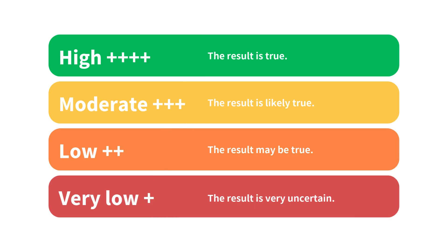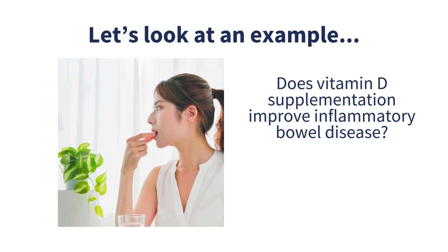What do these levels of certainty mean? High means that we are sure the result is true. Moderate means we think the result is probably true. Low means that the result may be true. And very low means that we are very uncertain whether the result is true.